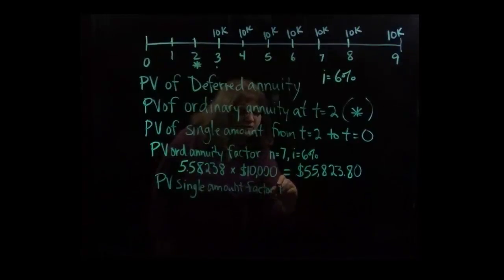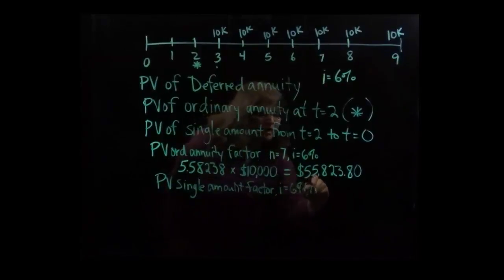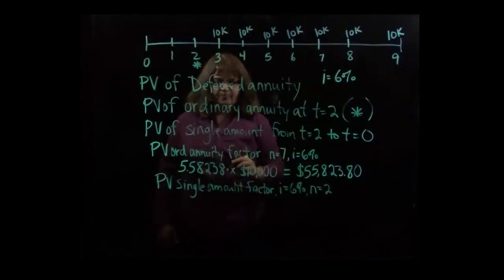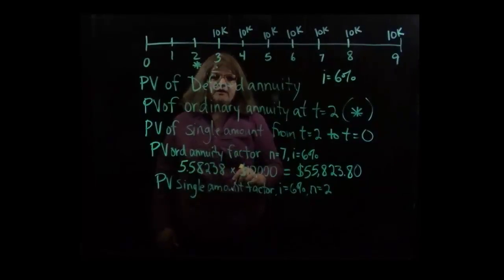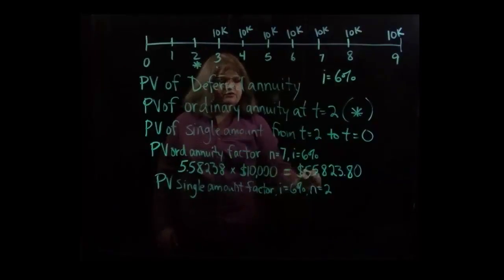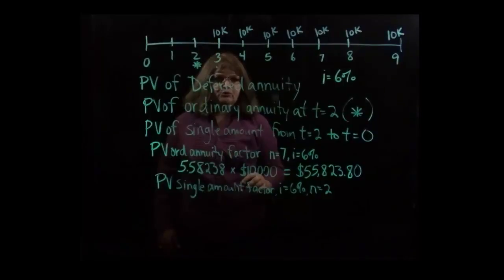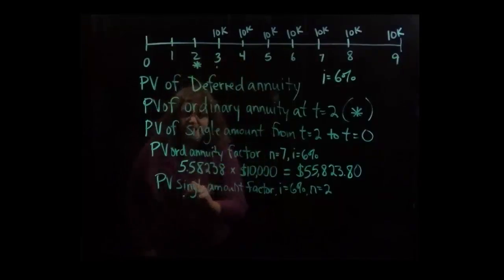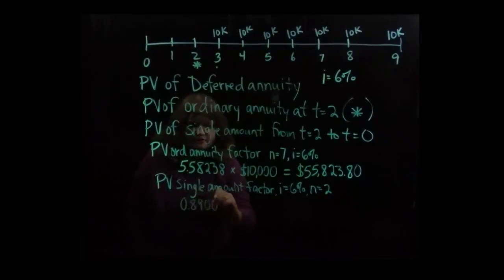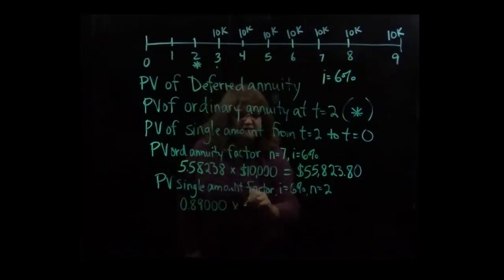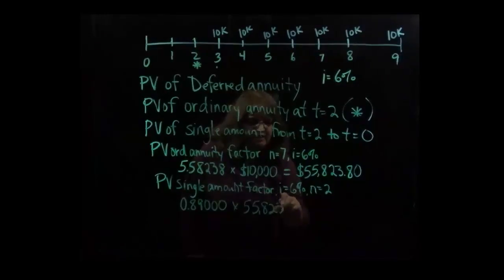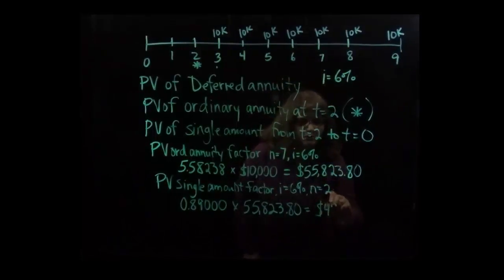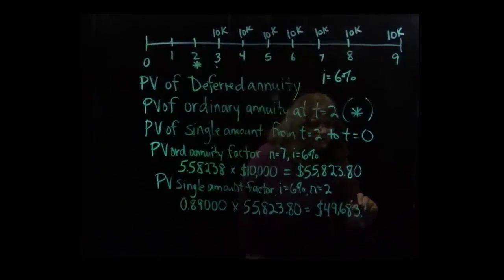And again, we're looking for interest rate equals six percent, but this time we want n equals two, because we're just discounting it back from time t equals two to time t equals zero. So take a look at the present value of a single amount table and find the factor where the interest rate is six percent and the number of periods is two. As you can see, that factor is 0.89000. And if we multiply that times the $55,823.80, that gives us the overall present value of this financing arrangement as $49,683.18.